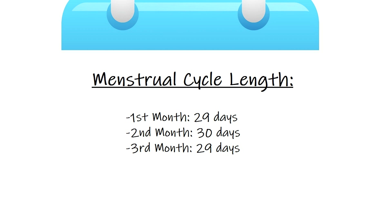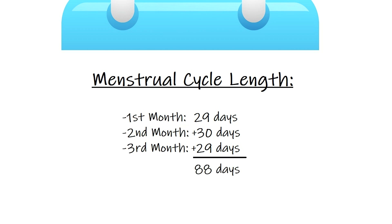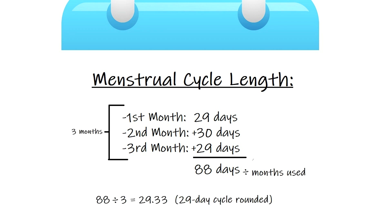To calculate the average menstrual cycle length, we add 29 plus 30 plus 29, which gives us 88. Then we divide by the total number of months we used, which was three. That gives us an average menstrual cycle length of 29.33 repeating, and we round to the nearest whole number — which is 29 days. So the menstrual cycle length is 29 days.